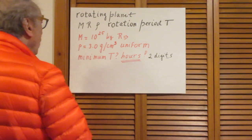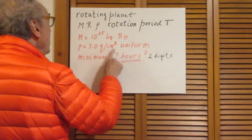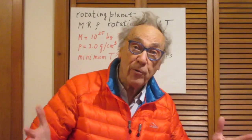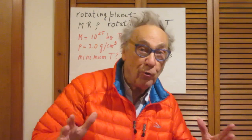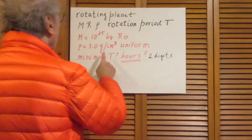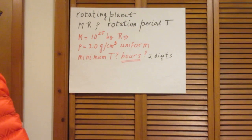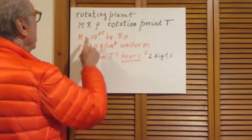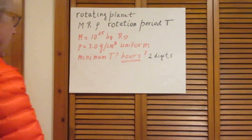Let this be the mass of the planet, and we'll take a density which is not uncommon — an average density of about 3 grams per cubic centimeter — so you get an answer that's not completely unreasonable. That is then the uniform density. If you want to calculate what the radius of the planet is, that would be easy because you know the mass and you know the density, so I will leave you with that.